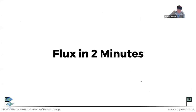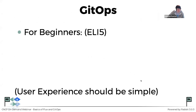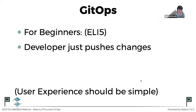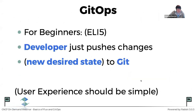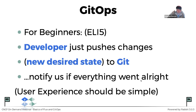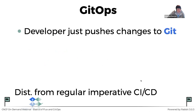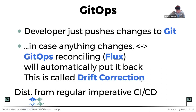Flux in two minutes: the main concept is that the user experience should always be simple for developers. Developers push their changes to Git — that's the desired state — and those changes automatically go to Kubernetes. Git is the version store here. There's also the concept of reconciling and drift: if infrastructure changes in place and drifts from the desired state defined in Git, GitOps will put it back.